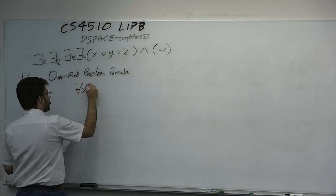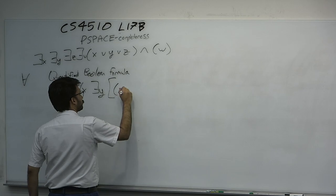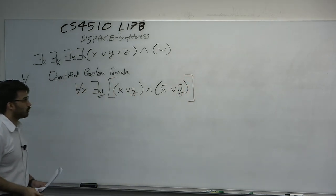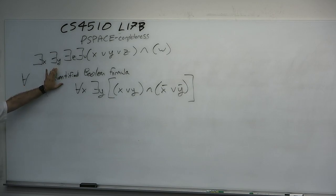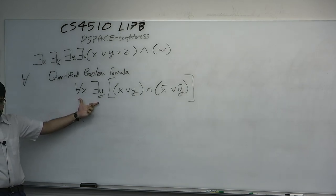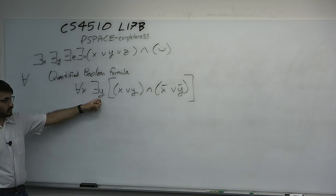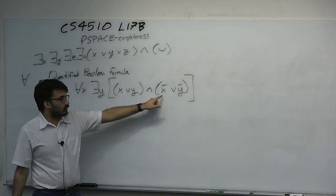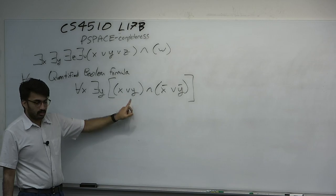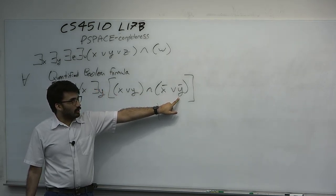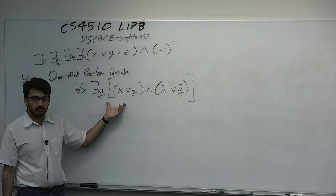Consider this quantified Boolean formula: for all X, there exists Y, such that (X or Y) and (not X or Y). Is this true? For all X, we need it to be true whether X is 0 or X is 1. If X is 0, we can choose Y equals 1 to satisfy it. If X is 1, the first clause is on, and we can turn the second on by choosing Y equals 0. So this quantified Boolean formula is true.